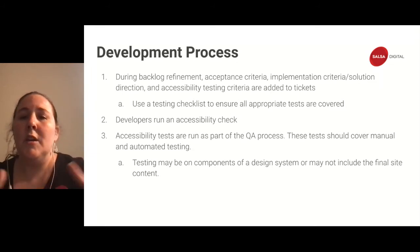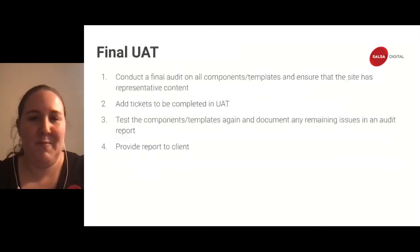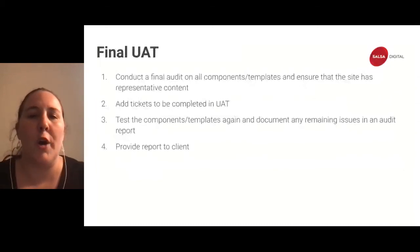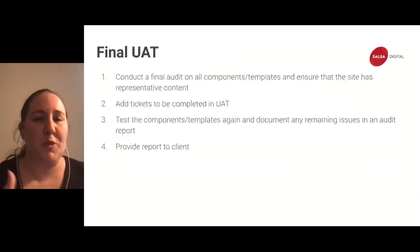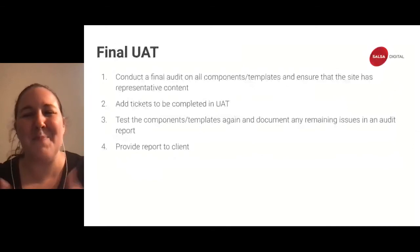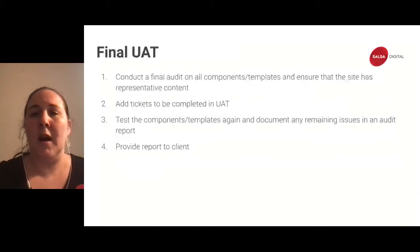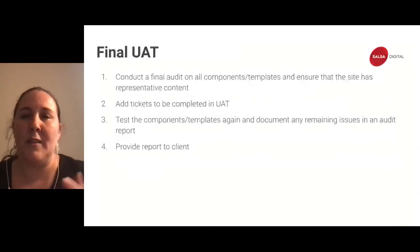For final UAT, just like regression testing, we want to do the same with accessibility. Conduct a final audit on your components, templates, and full pages — if your site has real content, great, but at least make sure it has representative content. Add tickets to be completed in UAT, and start creating an audit document or audit report — that template is open sourced in the resources — then provide the report to the client.